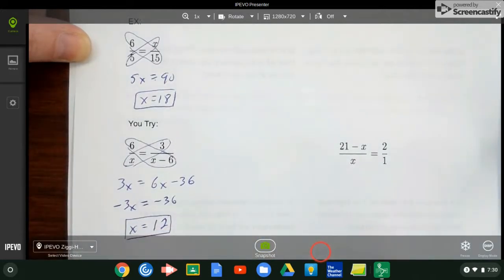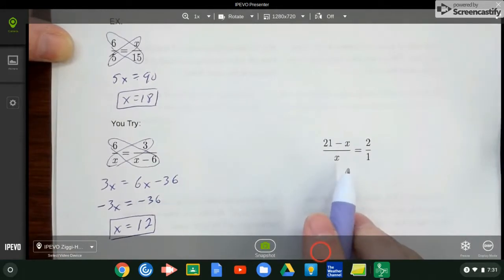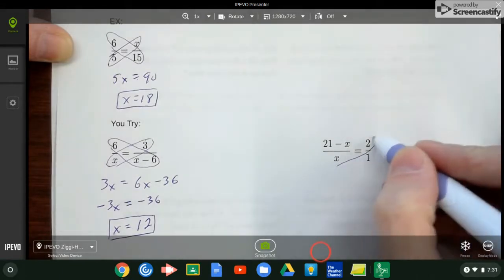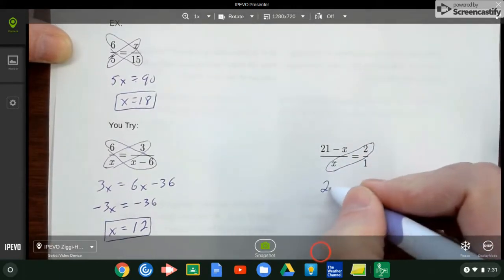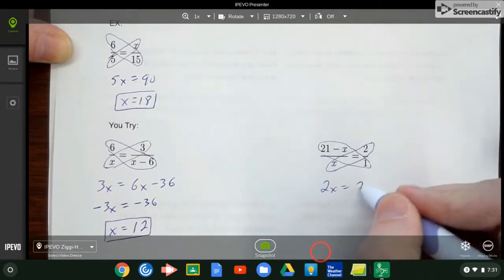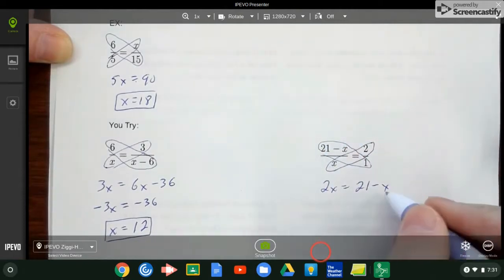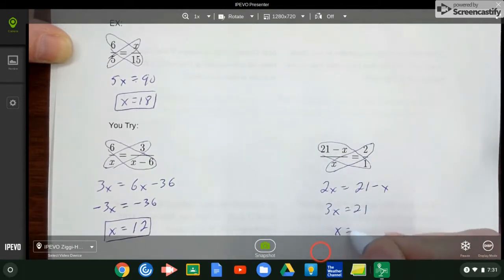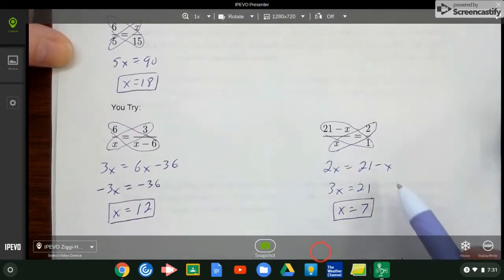Try the next one. Again, watch your multiplication. So this one's a little easier. My cross product: 2 times x, and the nice thing about 1 is when I multiply by 1 nothing really changes. So that's 3x equals 21, so x is 7.